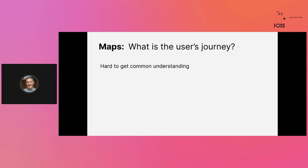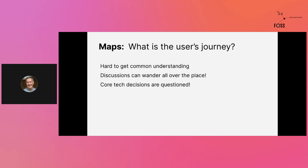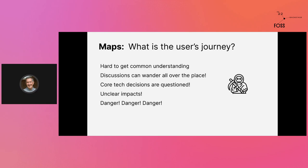It's really hard to get this common understanding, and good UX is based on having a good map. Discussions can wander all over the place, especially if you've got a dev team that really thinks they understand everything and they're building just for themselves. Core tech decisions can be questioned, there are unclear impacts, and the UX person could be asking for things that have huge technical costs. Too often, UX designers are seen as a harbinger of death — like all they do is make things harder. But they're seeing it from the user's point of view and asking, can these problems be solved? You don't have to say yes to everything, but it is important to draw a map of these things and have that discussion.